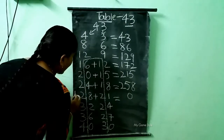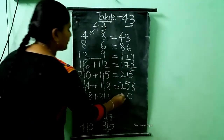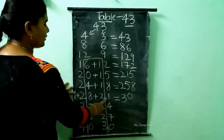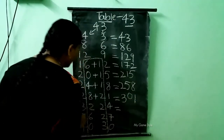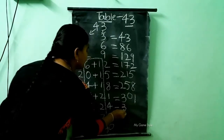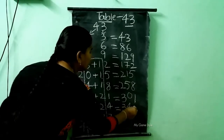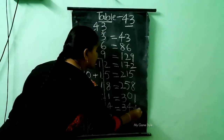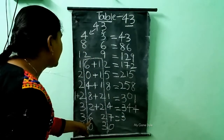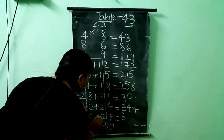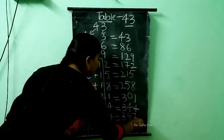And next step we are adding these 2 numbers. 2 plus 1, how much children? 3. I am writing 3 here. And 1 is there, so I am writing 1 as it is. Here it is 3, so I am writing 3 as it is. And here 2 plus 2, how much children? 4. Here 4 is there, so I am writing 4 as it is. Here 3 is there, so I am writing 3 as it is. 6 plus 2, how much children? 8. I am writing 8 here. And here 7 is there, so I am writing 7 here.